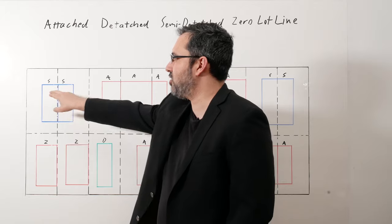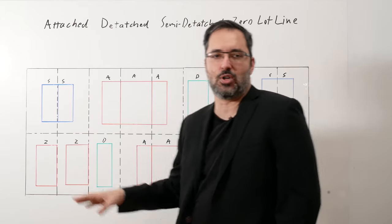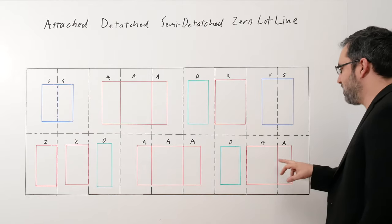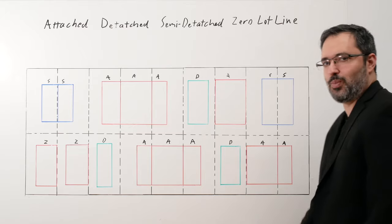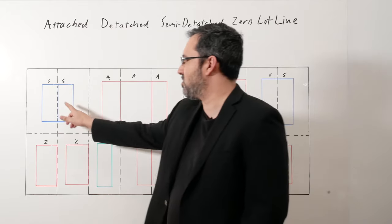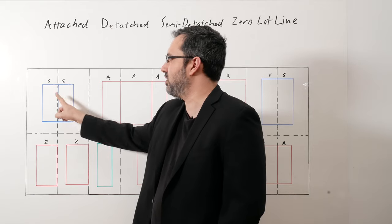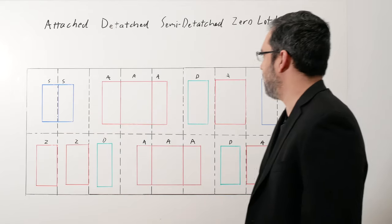A semi-detached is only attached to another semi-detached. It's never attached to anything else. So if you're attached to an attached, you're both attached. It's a little confusing, but that's the way the zoning code writes it. A semi-detached is only connected to another semi-detached.